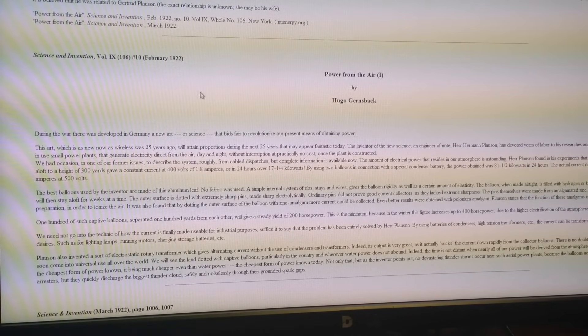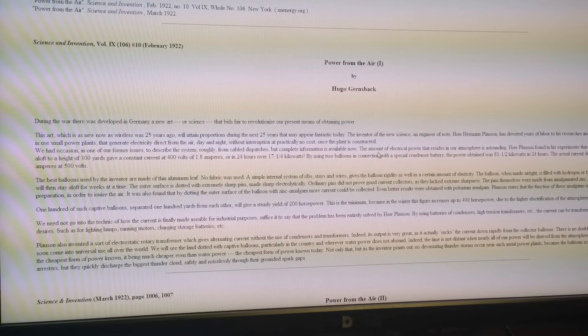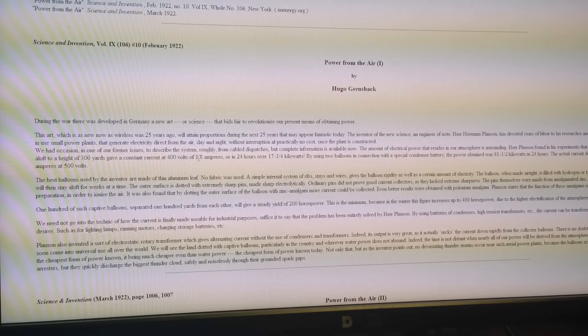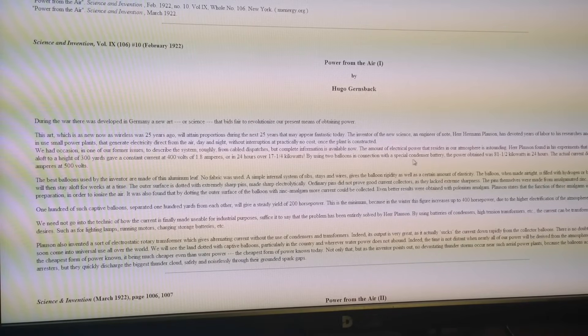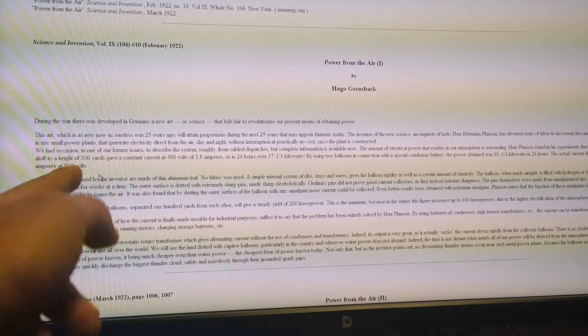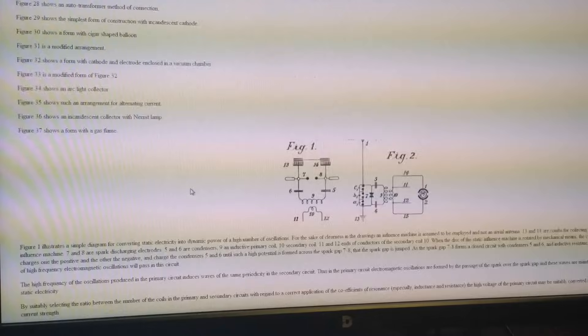This is from Science and Invention, February 1922, and it's some information on what they were doing in Germany with aerial antennas and balloons. The part that I just wanted to share here is where it says the amount of electrical power that resides in the atmosphere is outstanding. These guys went out and they sent up a single balloon to 300 yards and they got a constant current of 400 volts at 1.8 amps, folks. That's a lot of energy. It says by using two balloons in connection with a special condenser battery, the power obtained was 81 kilowatts in 24 hours. The actual current delivered was 6.8 amps at 500 volts. So we're talking about some serious amounts of energy, very fascinating.